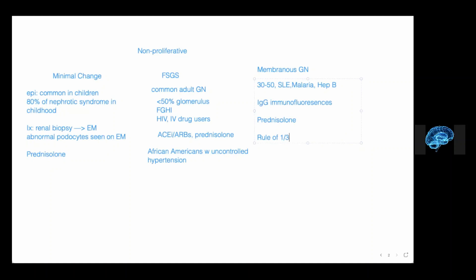For membranous glomerulonephritis, the rule of thirds applies: one-third of patients undergo remission; one-third retain a chronic membranous glomerulonephritis diagnosis and suffer from symptoms chronically; and one-third actually progress to end-stage renal failure.